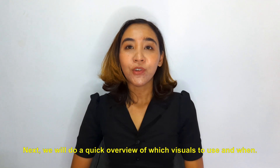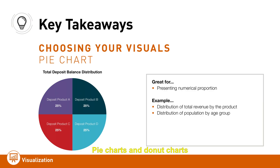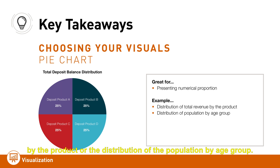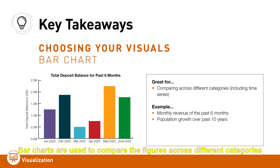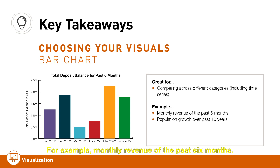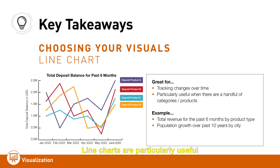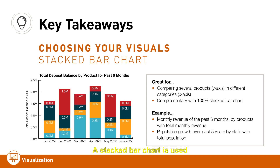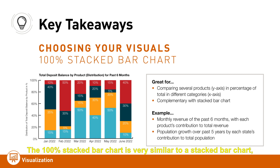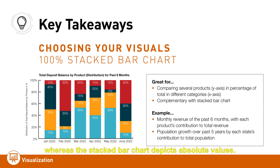Next, a quick overview of which visuals to use and when. Pie charts and donut charts can be used to present numerical proportions — for example, the distribution of total revenue by product or population by age group. Bar charts are used to compare figures across different categories and for time series comparison. Line charts are useful when comparing data against different categories over time. A stacked bar chart compares categories within a total figure, while the 100% stacked bar chart describes figures as percentages rather than absolute values.